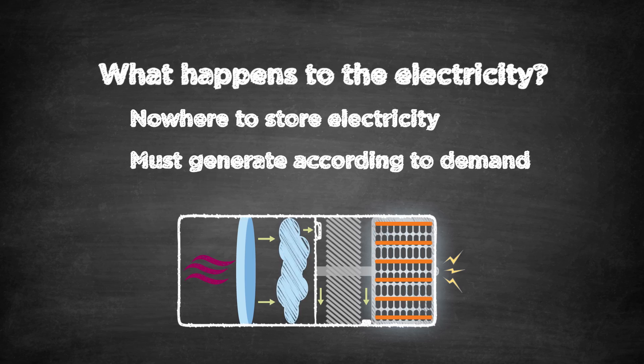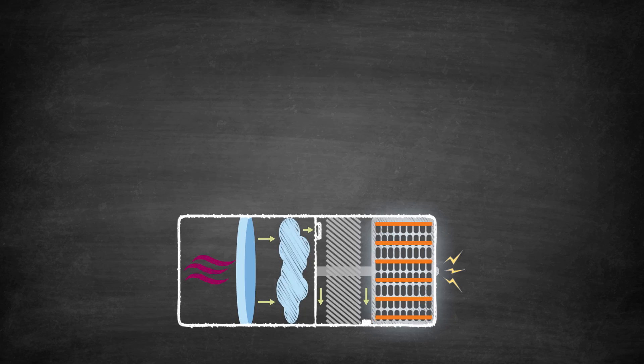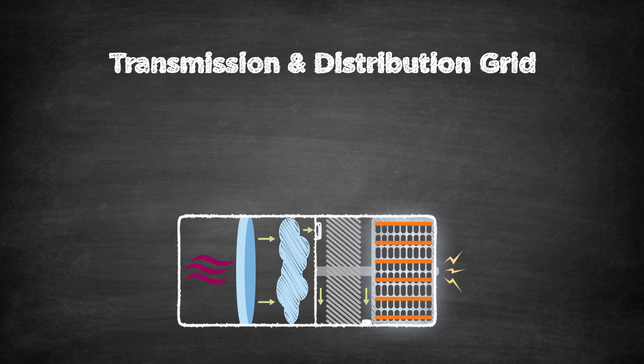To get electricity from the generator to your house requires some more equipment. This system is called the transmission and distribution grid, or you may have heard it called the grid.